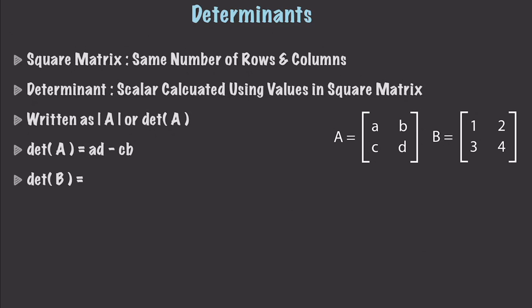Now to find a determinant, there are different ways of saying that something's a determinant. You can put two lines — it looks like an absolute value like that — or you can write out 'determinant' like that. Either way is perfectly fine.